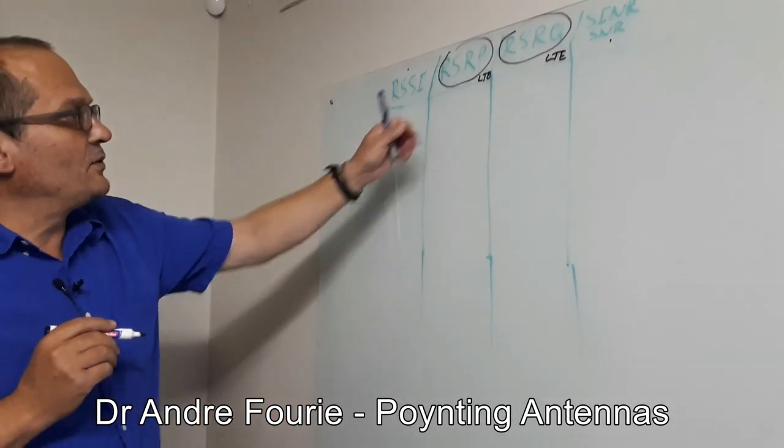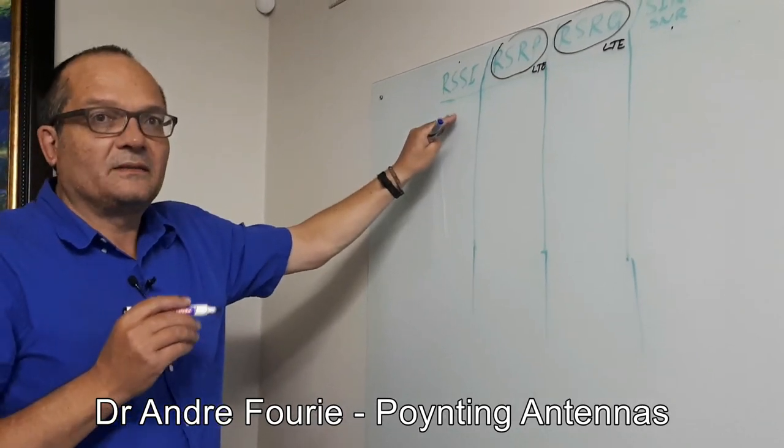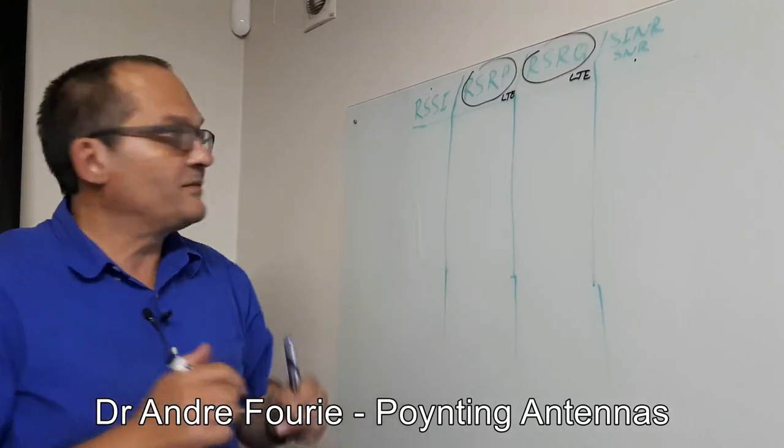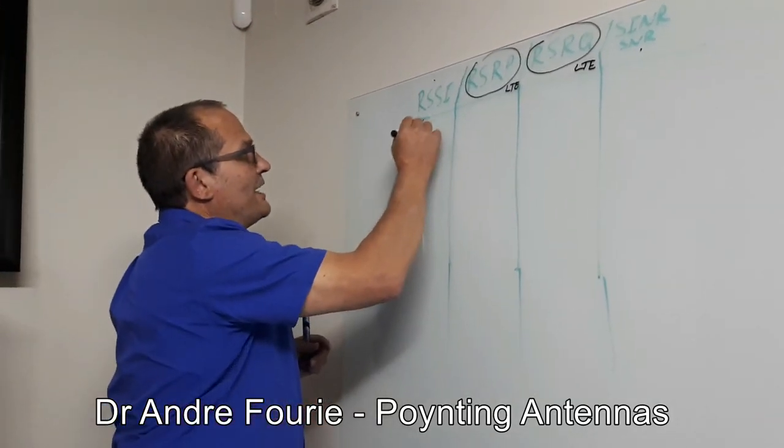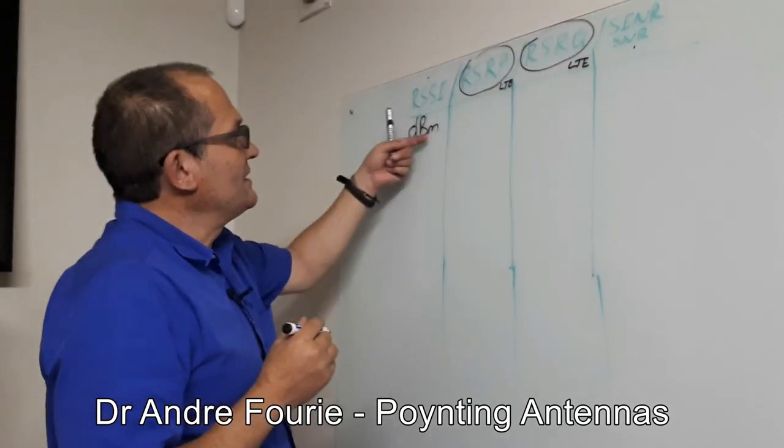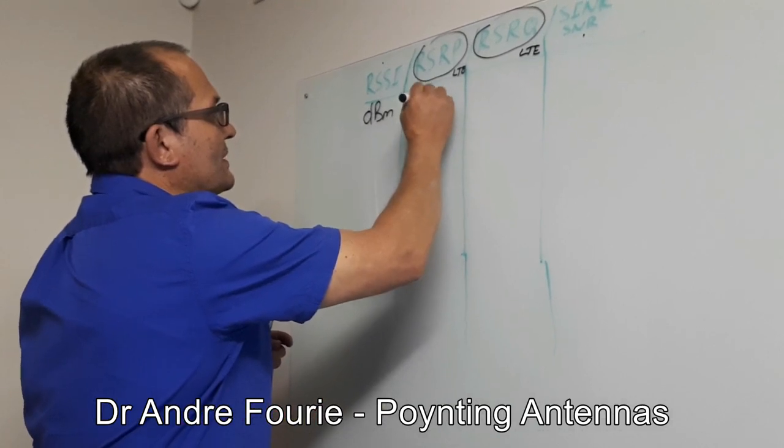This stands for the difference between them. This measures the received signal of a whole band, and this looks at the signal relative to the noise. So this guy is in dBm, which means it's a power measure. Always negative because signals that you receive is signal relative to the milliwatt, and the same with this guy.